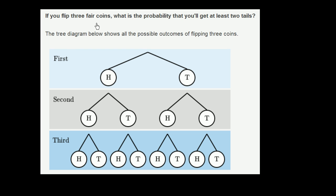If you flip three fair coins, what is the probability that you'll get at least two tails? The tree diagram below shows all the possible outcomes of flipping three coins.